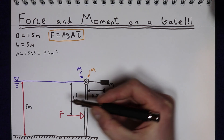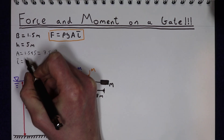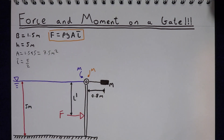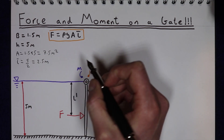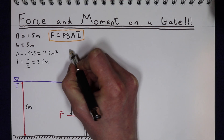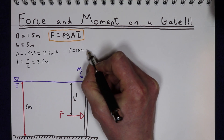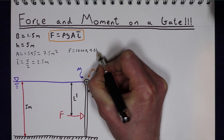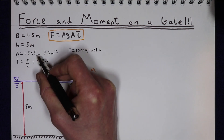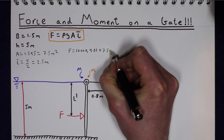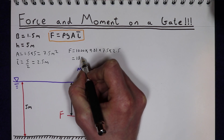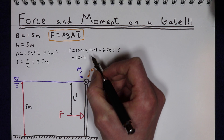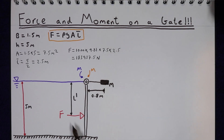The centroid is just going to be half depth, so the centroid of our gate is going to be 5 over 2, which gives us a centroid location of 2.5 metres. So immediately we can work out that force F as the density of water times by acceleration due to gravity times by the area of the gate which is 7.5 metres squared times by the centroid, and that gives us a total force on the gate of 183,937.5 newtons.